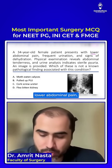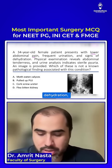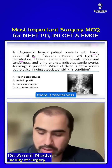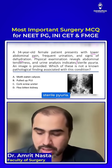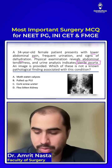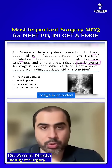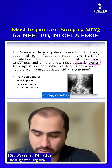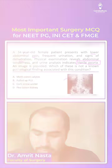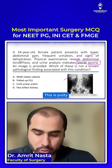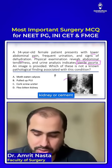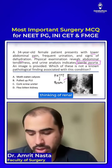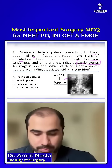A female presents with lower abdominal pain, dehydration, tenderness, and sterile pyuria. An image is provided — this is a putty kidney or cement kidney. You are thinking of renal TB, given the sterile pyuria.